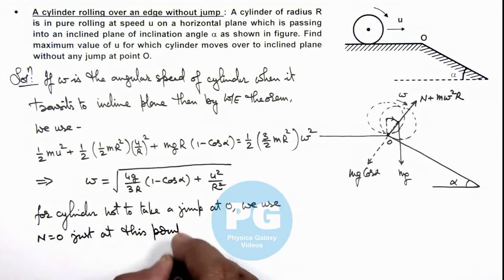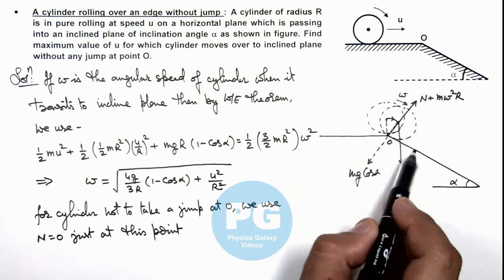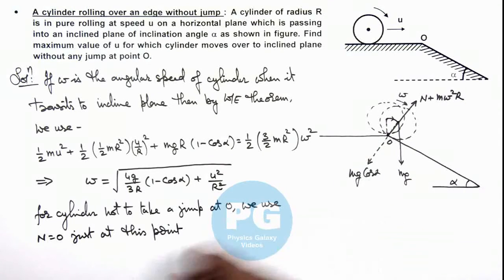This point means the point when the cylinder transits to the inclined plane. So this implies here we can write, N should be zero, that means we can write m omega squared R should be equal to mg cos alpha. So here m gets cancelled out.